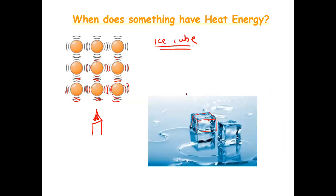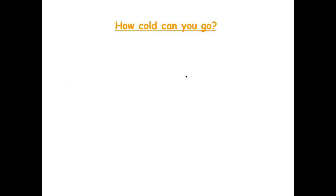Something can have heat energy even if we describe it as cold, like ice. Zero degrees is just the temperature we set as a lower boundary for the everyday temperatures we see on Earth.